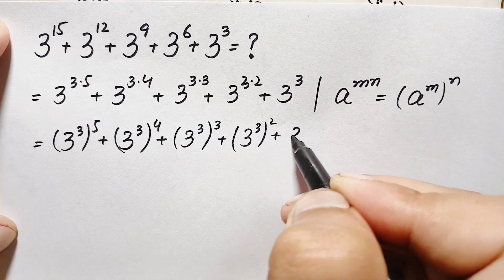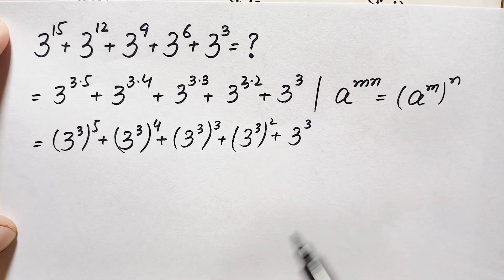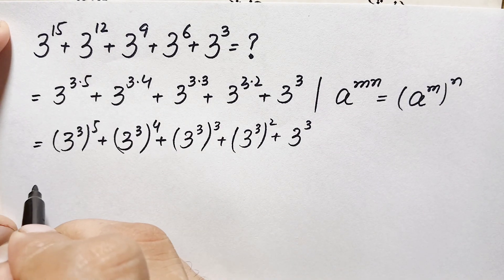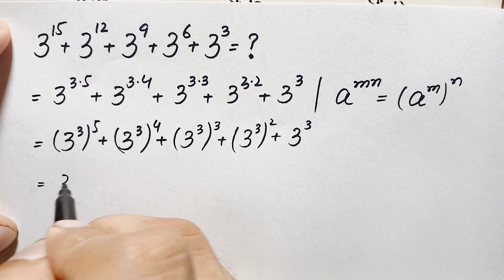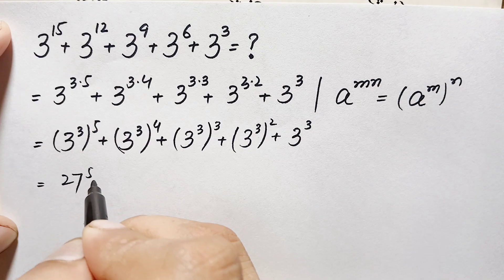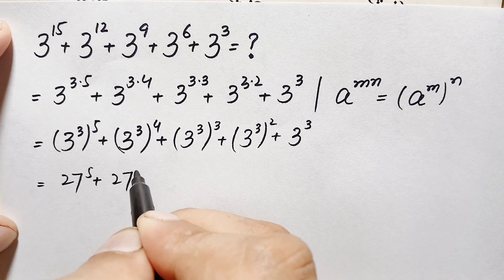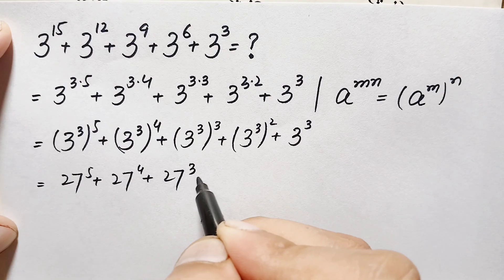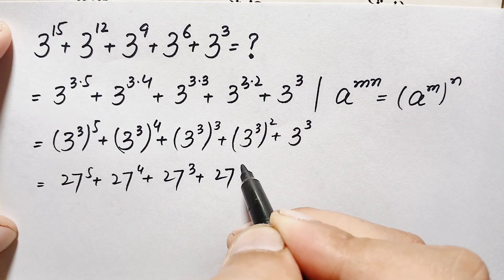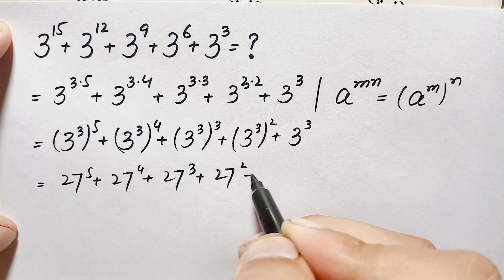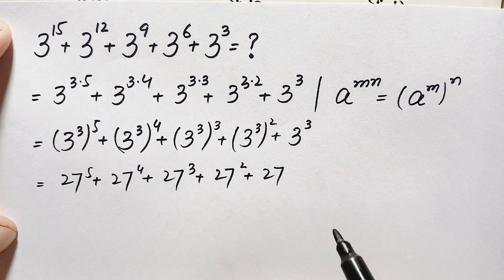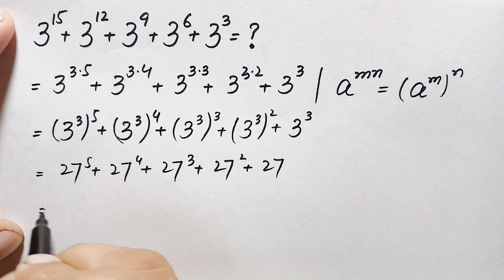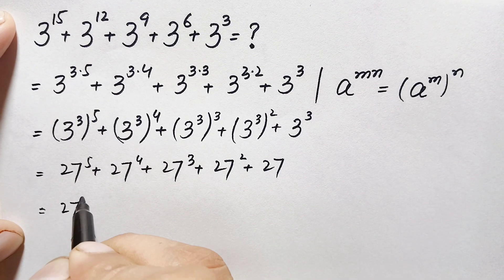Continuing, we also have plus 3 cube raised to the power 2, plus 3 cube. Now we substitute the value of 3 to the power 3, which is 27. So this becomes 27 to the power 5, plus 27 to the power 4, plus 27 to the power 3, plus 27 to the power 2, plus 27.